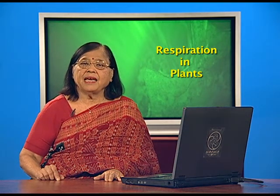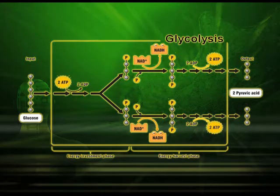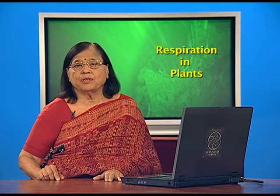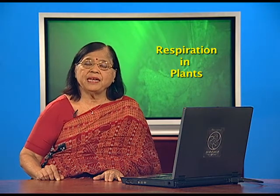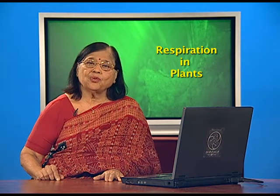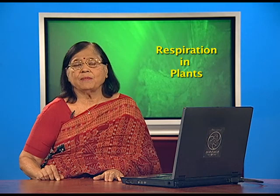Energy is stored and it is released slowly and gradually as per the requirement of the living body, and is converted to ADP. The ADP is again enriched to ATP, and that ATP will again be converted to ADP after utilization of energy. This means we need this process to go on continuously in the living body, and for that we need oxygen continuously. That comes through respiration, which is important for all living organisms and also in plants.